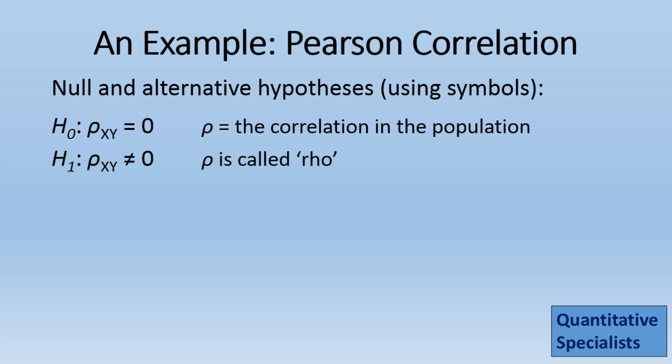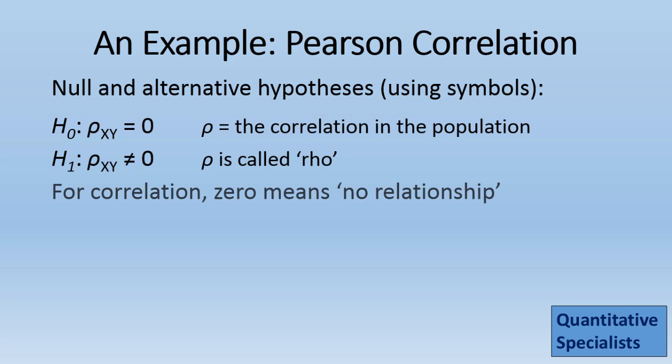Using symbols, the null states rho xy equals 0, where rho (that symbol that looks like a P) is the correlation in the population. The alternative states rho xy does not equal 0. In other words, the null states there's no correlation between x and y in the population, whereas the alternative states there is a correlation between x and y in the population. Here, 0 means no relationship — so when the null says it equals 0, it's saying there's no relationship, and when the alternative says it's not equal to 0, it's stating there is a relationship.